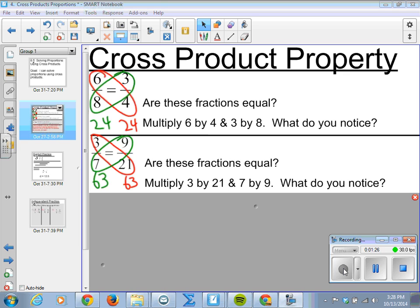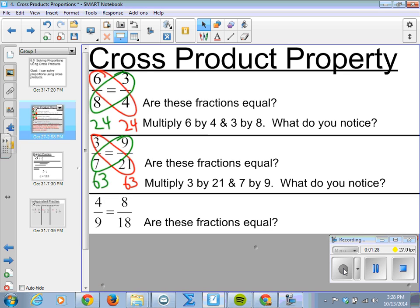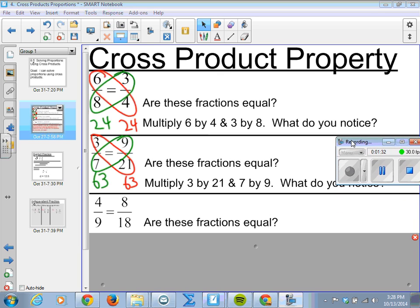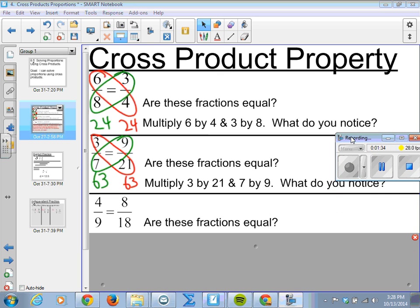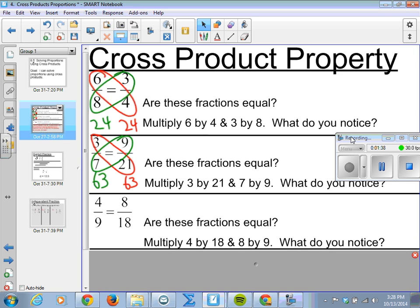Now, moving down, we have 4 9ths and 8 18ths. So, again, we know they're equal. Multiply 4 by 2, you get 8, 9 by 2, you get 18. But, multiply diagonally.